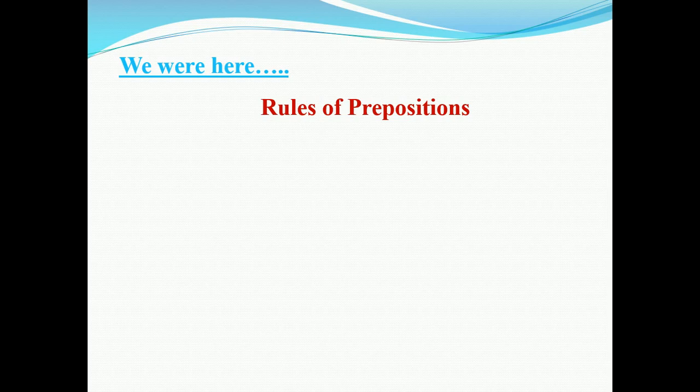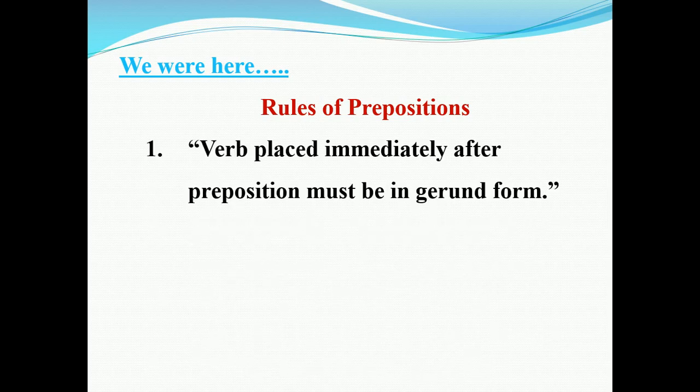Do you remember what was the first rule? The first rule says, a verb placed immediately after a preposition must be in gerund form. The ing form of the verb is known as gerund. For example: playing (play + ing), going (go + ing). All these are gerund in form. So, a verb placed immediately after a preposition must be in gerund form. That's the first rule.